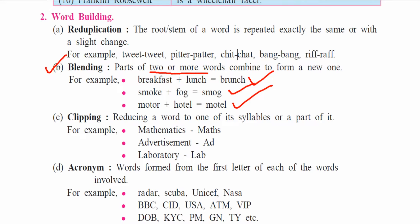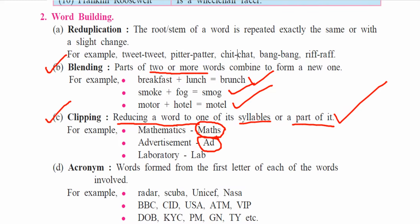The third process is clipping, which means reducing a word to one of its syllables or a part of it. For example, 'mathematics' is clipped to 'maths,' 'advertisement' becomes 'ad,' and 'laboratory' becomes 'lab.' Mathematics, advertisement, and laboratory are the complete words; maths, ad, and lab are their shortened clipped forms.